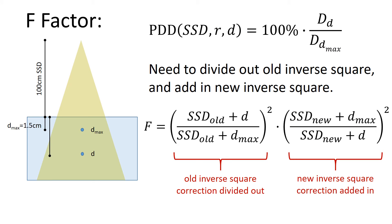So to get the f-factor, we basically just need to divide out the old inverse square that's basically inherent in the PDD, and add in the new inverse square correction. So I've broken it up here based on the old inverse square correction being divided out, and then the new inverse square correction being added in, or multiplied in. And you can see that here with this f-factor, and we can just calculate that directly.